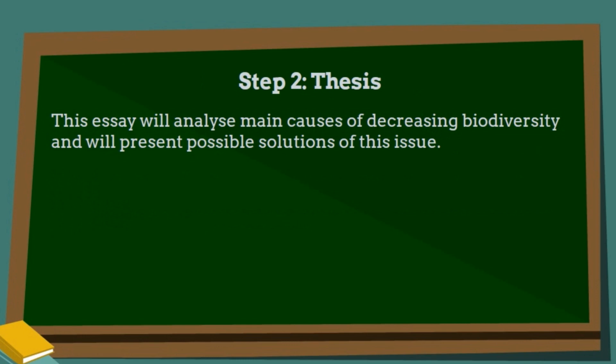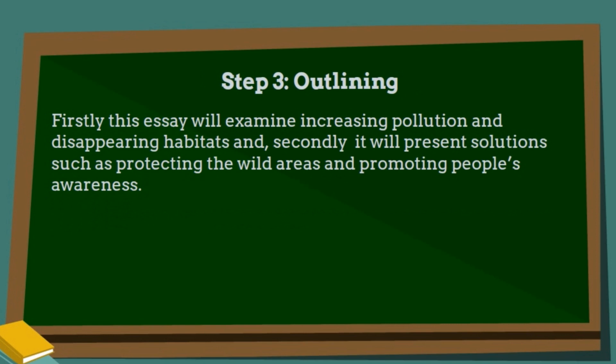Generally, you state that you will show causes and solutions. In the last sentence, you outline what causes and what solutions you will present in your essay and what the order will be. Firstly, this essay will examine increasing pollution and disappearing habitats. And secondly, it will present solutions such as protecting the wild areas and promoting people's awareness.